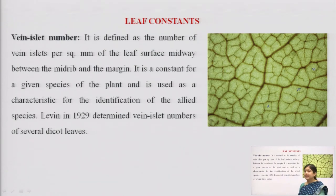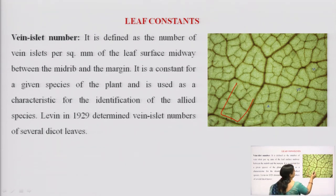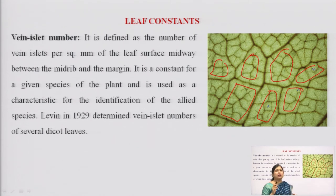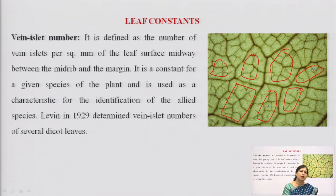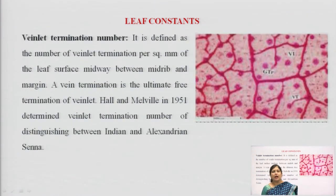The next leaf constant is vein islet number. When we look at the lamina of a leaf under the microscope, we see certain closed compartments formed by the veins. These closed compartments are the vein islets. The number of vein islets present per square millimeter of a leaf is defined as the vein islet number.